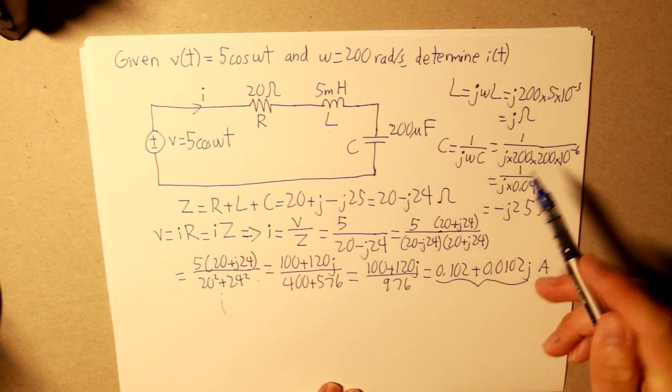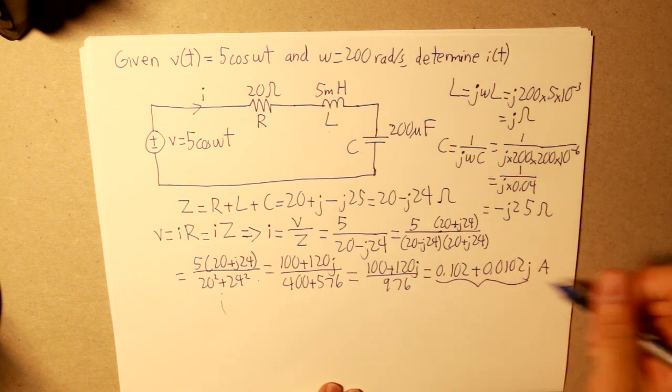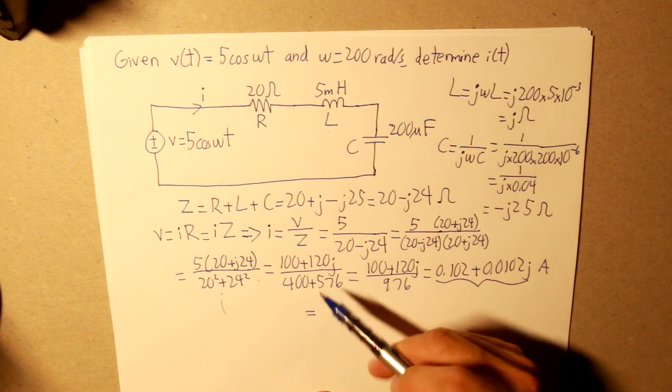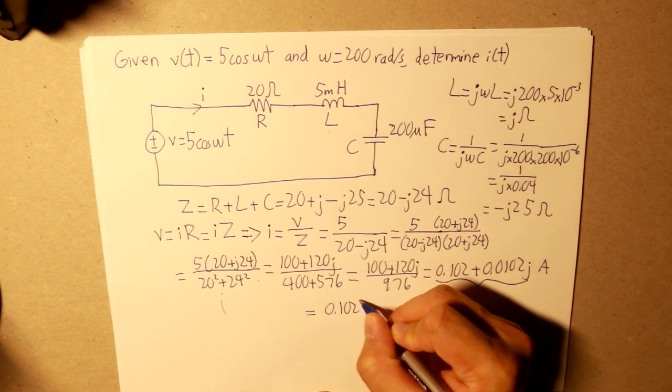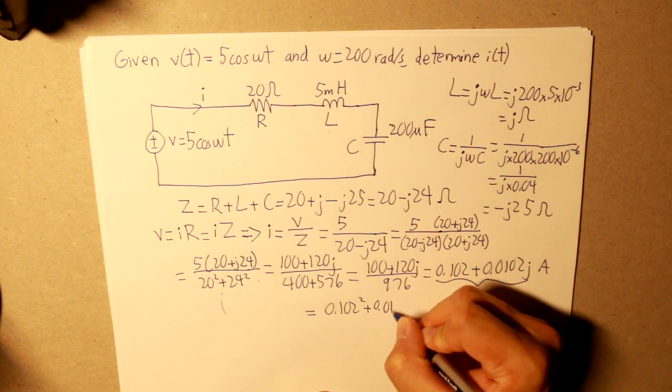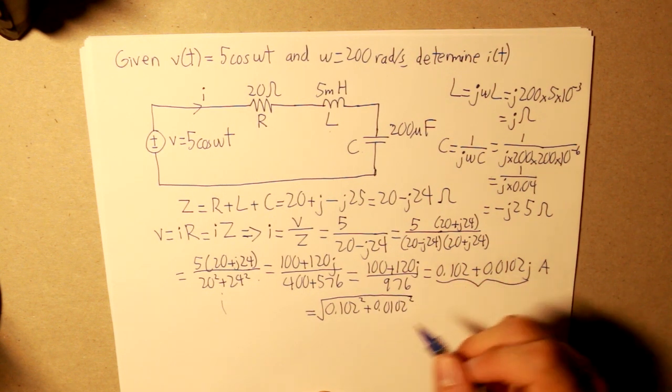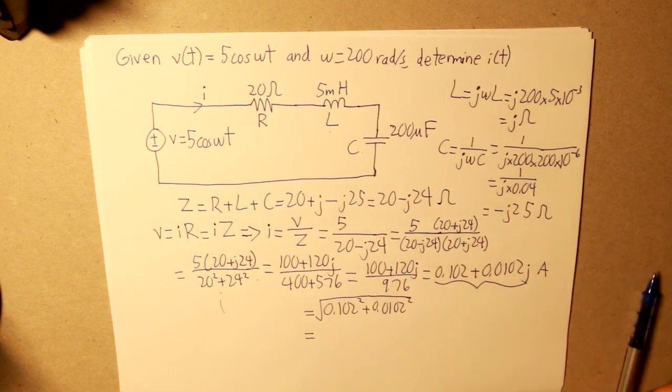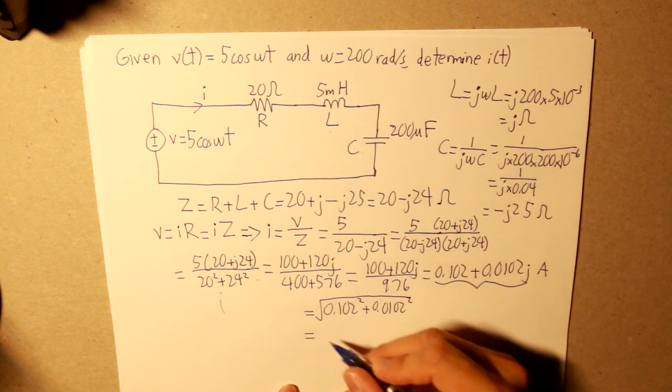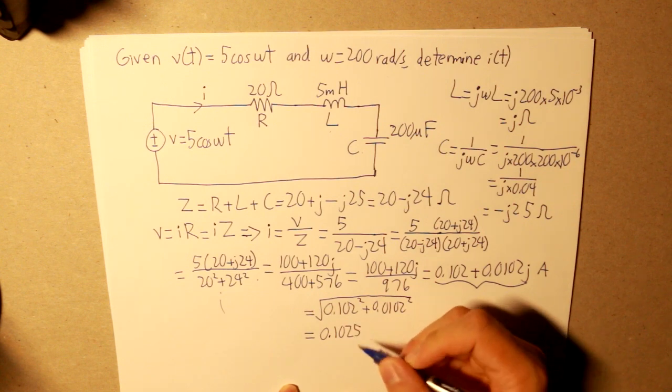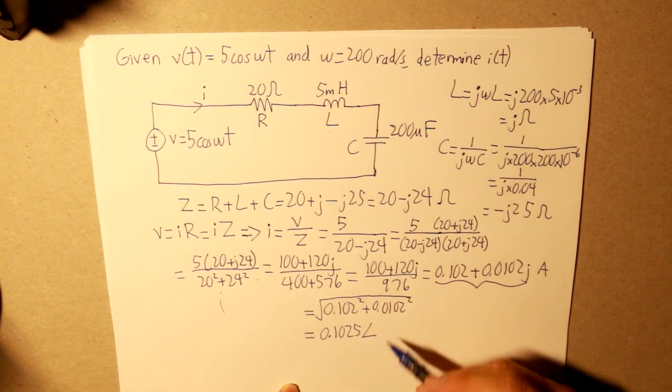First, what we need to do is find its magnitude using the Pythagorean Theorem. 0.102 squared plus 0.123 squared. And then we square root that, and what we get is our magnitude. So our magnitude will be 0.1025.